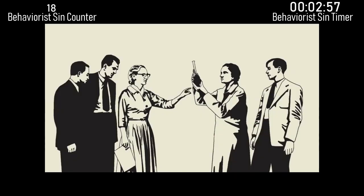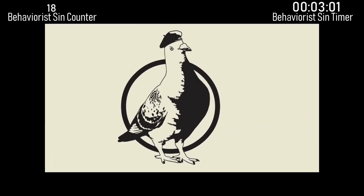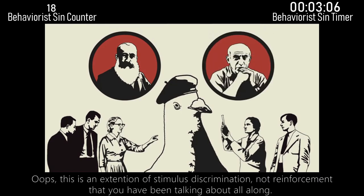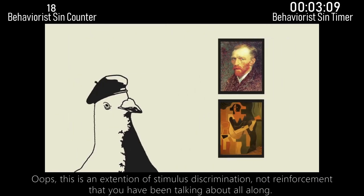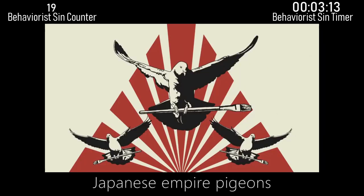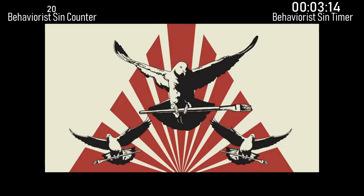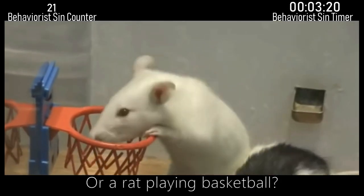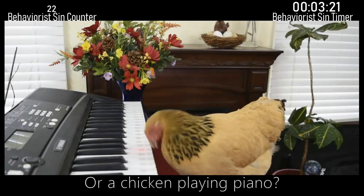One group of scientists showed the power of operant conditioning by teaching pigeons to be art connoisseurs. Scientists have taught pigeons to select paintings by Monet. This is actually an extension of stimulus discrimination, not reinforcement, which is what you have been talking about all along. Maybe next they'll condition the pigeons to paint their own masterpieces — but how about pigeons playing ping pong, a rat playing basketball, or a chicken playing piano?